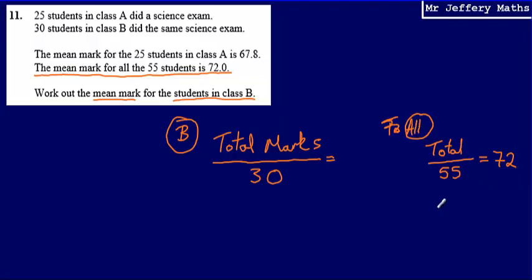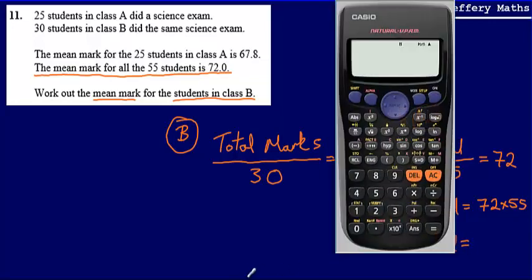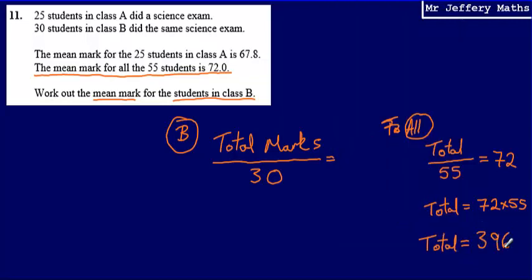The total number of marks scored by all 55 students divided by 55 equals 72, so the total is 72 multiplied by 55. Let's work that out: 72 multiplied by 55 gives 3,960. So that's the total number of marks scored by all of the students.